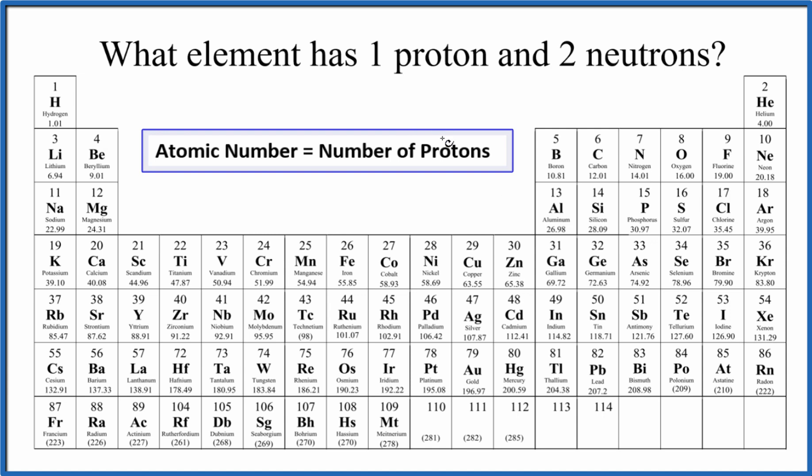What you need to recognize is that the number of protons equals the atomic number on the periodic table. So if we have one proton, we have an atomic number of one. The atomic number on the periodic table is the whole number above the element symbol. It increases by one as we go across the rows or periods on the periodic table.